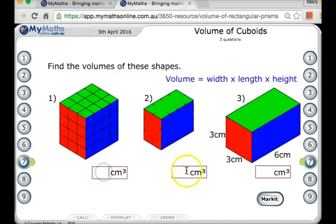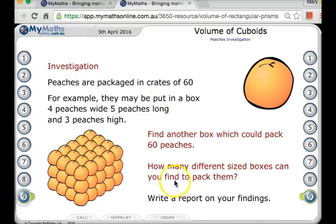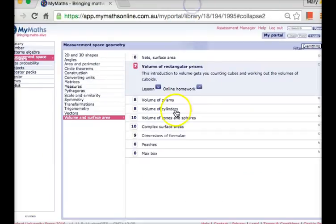They'll ask you questions and you put your answers in. Make sure you do all these. Towards the end, you'll get a little quiz and then there's an investigation. Once you've done that first lesson, I want you to go to the second lesson, number eight, which is Year 8 Volume of Prisms.